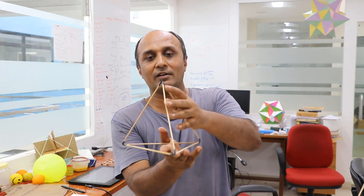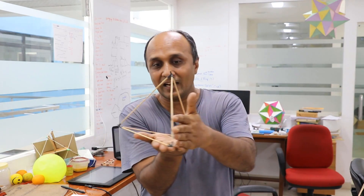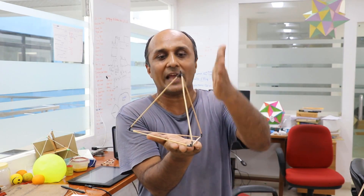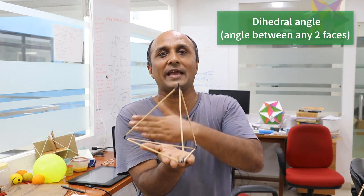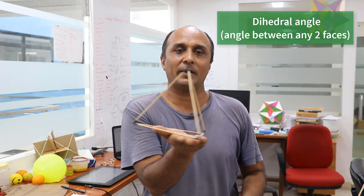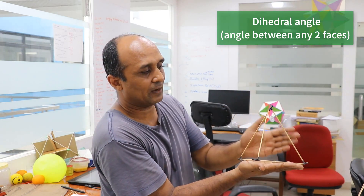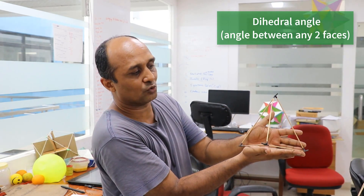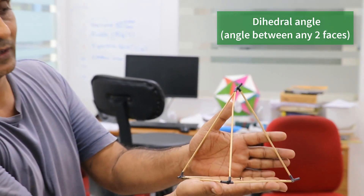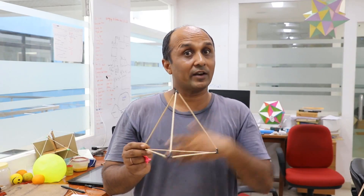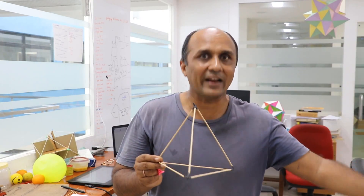The third thing will be the angle between any two planes of a Platonic solid — in this case, the angle between these two triangles. We are going to find each of those, so let's begin.